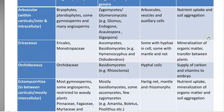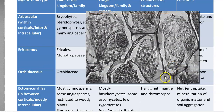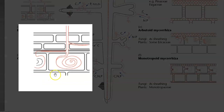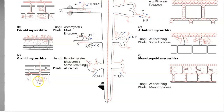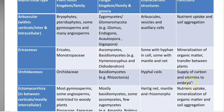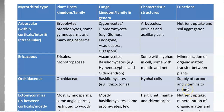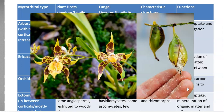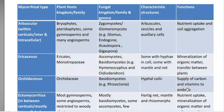The next one is orchidaceous mycorrhiza, mainly associated with orchid plants. They belong to the fungi Basidiomycetes; a classical example is Rhizoctonia. They form hyphal coils, as shown in the previous diagram for orchid mycorrhizas. The specific function of orchid mycorrhiza is to supply carbon — because orchid seeds are very small and may not have reserved carbon for germination, carbon itself is supplied through the mycorrhizal association. They also supply certain vitamins for the growing embryo of the plant.